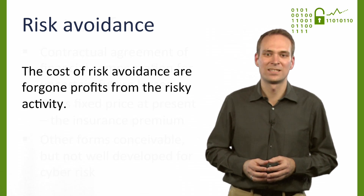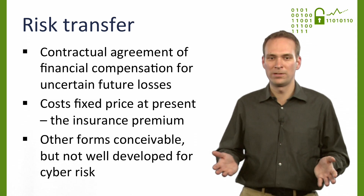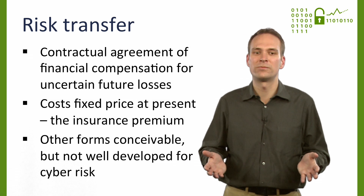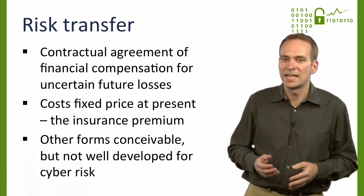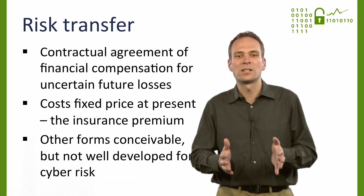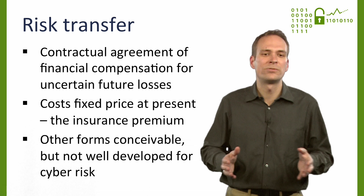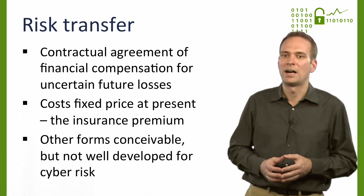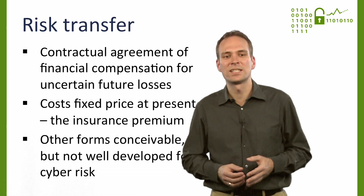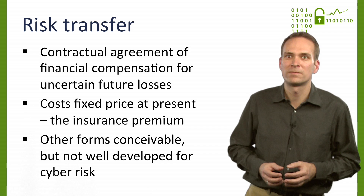The last instrument is risk transfer. It involves a contractual agreement with a third party to compensate the organization for losses incurred due to the realization of risk. A third party can be an insurance company who pools risks of many insured parties and counts on the law of large numbers, which gives hope that not all risks will realize at the same time. Other constructions are possible as well, including risk-linked financial instruments traded on markets, but such institutions are still premature for cyber risk.